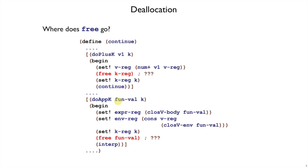Similarly, when we have an application, we've evaluated the function expression to some value. We're about to call that function, so we've got the body out of the closure and the environment. Maybe we can free the closure at that point.